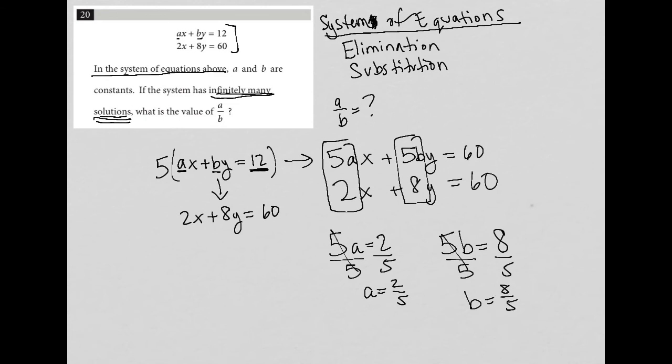The question is again asking what A over B is. So A is 2/5 over B is 8/5. Whenever I have a complex fraction like this, I know there's other ways to do this. But I like visually to say, well, this is the same as saying 2/5 divided by 8/5.